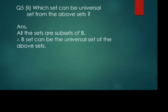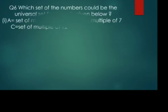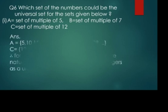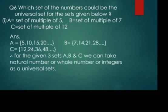Now we'll move to question number 6: which set of numbers could be the universal set for the sets given below? What is given? A is the set of multiples of 5, B is the set of multiples of 7, and C is the set of multiples of 12. Let us write them in listing method. A equals {5, 10, 15, 20, ...}.